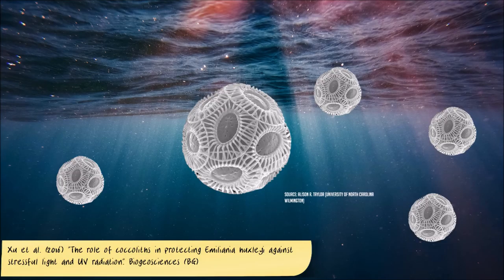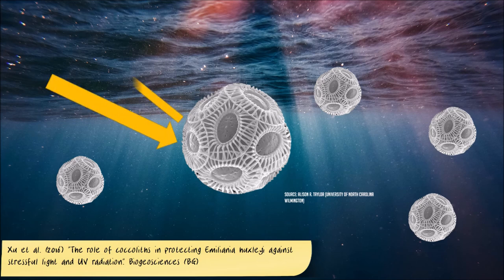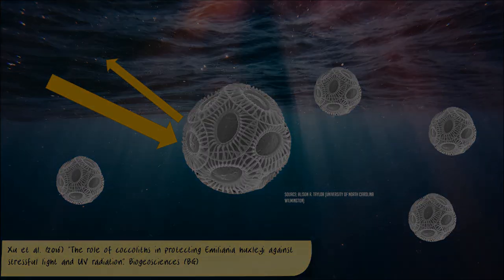The coccolithophore Emiliania huxleyi, a phytoplankton species that covers itself with small calcium carbonate scales called coccoliths, is assumed to be able to backscatter intense solar radiation, including UV. Scientists assume they are quite effective in doing so, reflecting up to 50% of the harmful radiation.